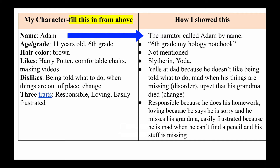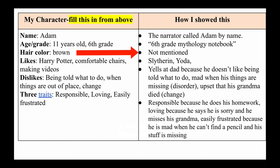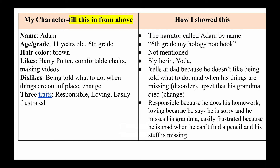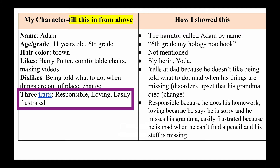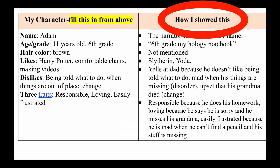On the chart in today's work, how did I show these things? I showed his name by calling Adam by name as the narrator. He's 11 years old — I showed that by talking about his sixth grade mythology notebook, so we know he's in sixth grade. His hair color is brown, but I didn't mention that. We know he likes Harry Potter, so I mentioned Slytherin and Yoda. He dislikes being told what to do — he yells at his dad because of that, and he gets mad when things are missing. His traits: he's responsible because he's doing his homework and going upstairs. We know he's loving because at the end he's sorry and he's missing his grandma.